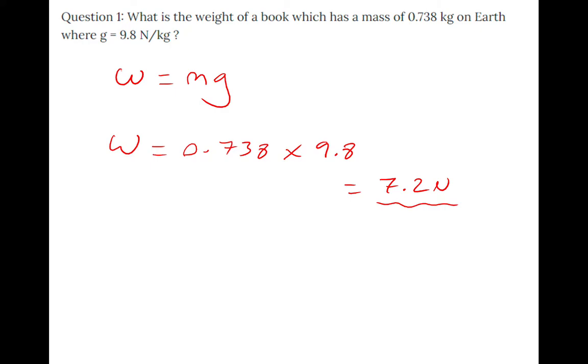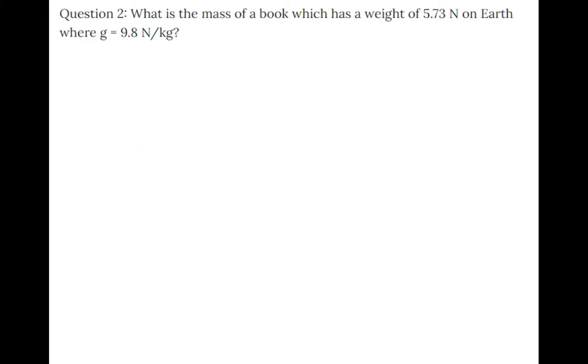This one's a bit different. If you feel confident, have a go. It says: What is the mass of a book which has a weight of 5.73 newtons on Earth, where gravitational field strength is 9.8 newtons per kilogram?